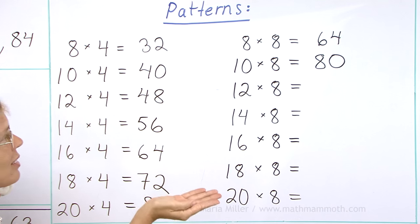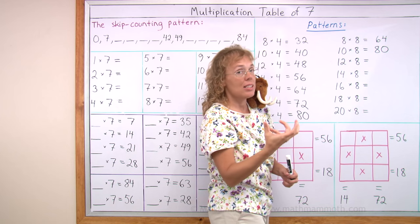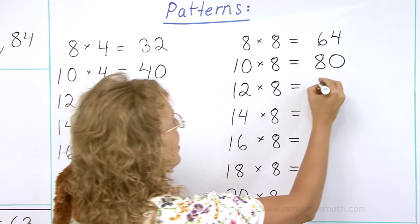Well, take 40 and double that. It's 80. Eight plus eight is 16. So 80 plus 16. Ninety-six.